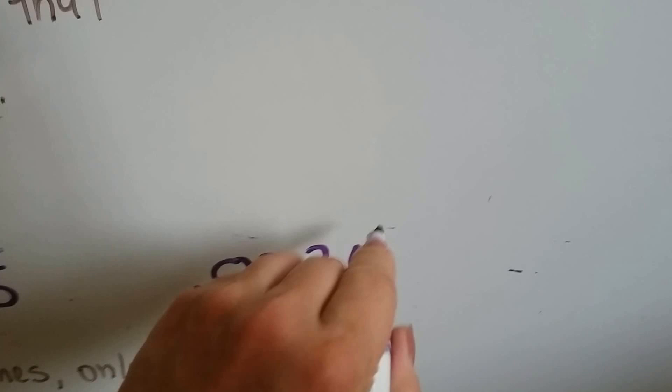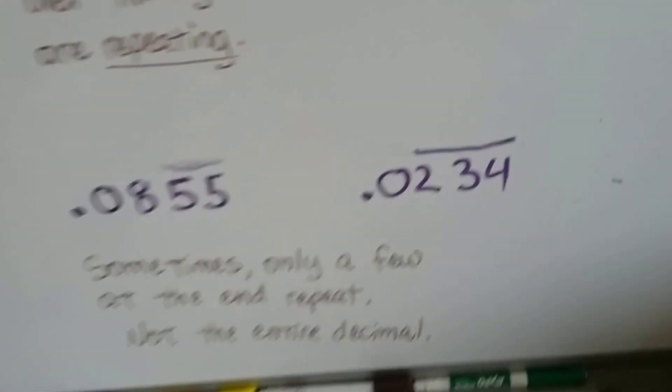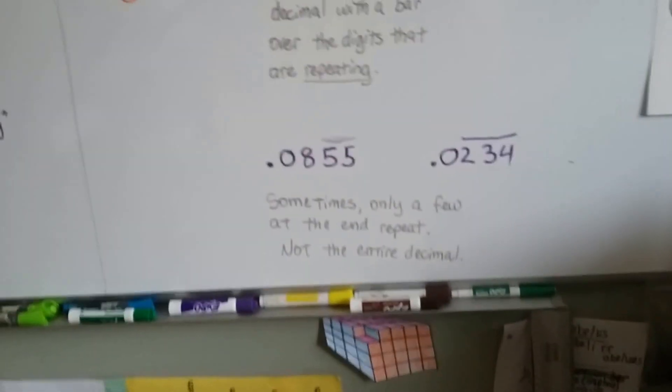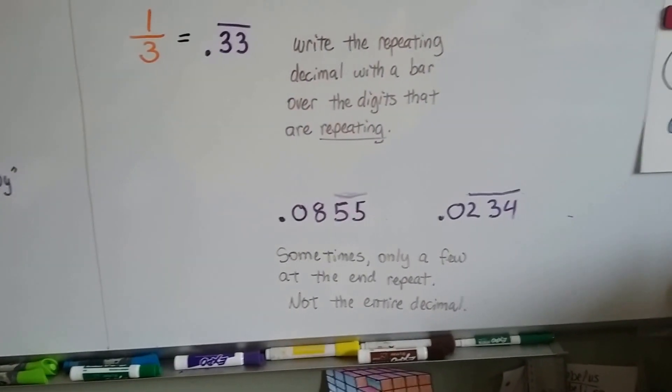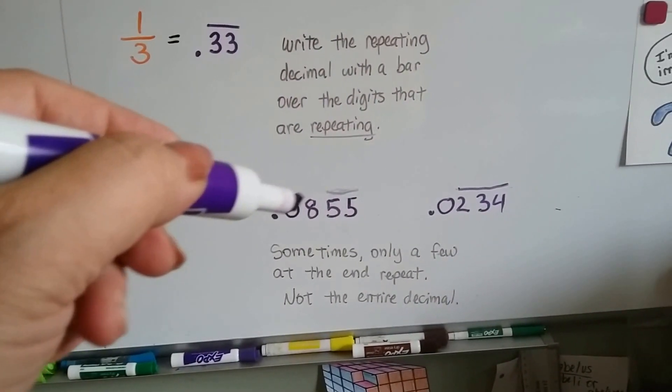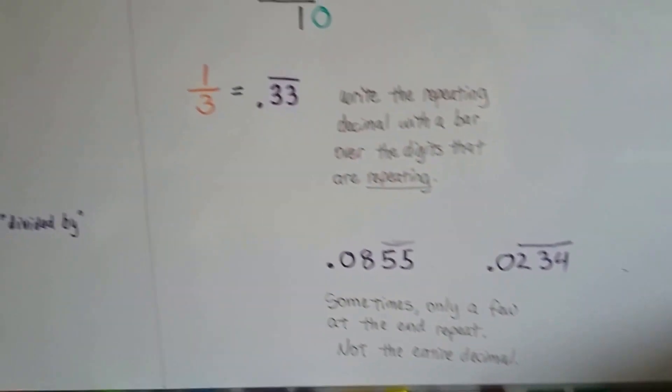Sorry, my bar is not straight, but we would make a straight bar. So the whole decimal isn't repeating, just part of it. So we don't put anything over the 8 or the 0 or that 0. We just put it over the part that's repeating.